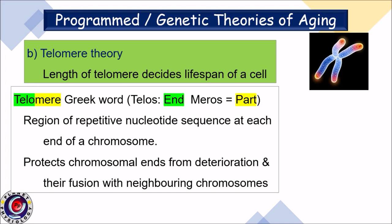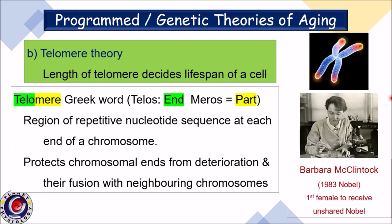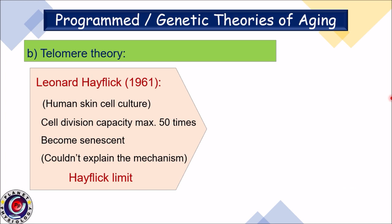Telomere is a Greek word where 'telos' means end and 'mere' means part. It is the region of repetitive nucleotide sequences at each end of the chromosome, and it protects chromosomal ends from deterioration and fusion with neighboring chromosomes. It was discovered by American cytogeneticist Barbara McClintock, for which she received the Nobel Prize in 1983. In 1961, Leonard Hayflick studied human skin cells in a laboratory and observed that cells can divide only up to 50 times and then become senescent, though he could not explain the mechanism behind it.